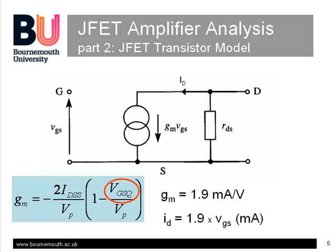The second component of the model, the resistance RDS, represents the slope of the JFET output characteristic of drain current against drain voltage. However, as this is normally in the tens of kilo ohms range, it can usually be safely ignored without doing too much damage if we don't know its actual value.